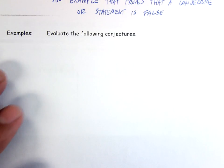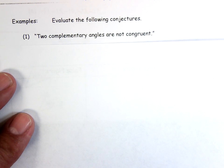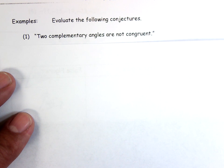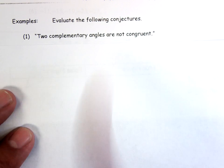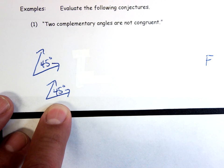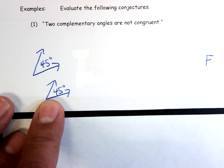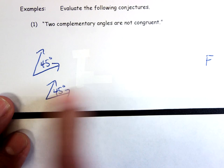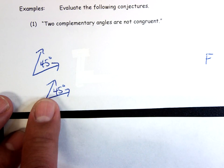It asks us to evaluate the following conjecture: two complementary angles are not congruent. Is that true or false? If it's true, it must be true always. Here's my example: a 45-degree angle and another 45-degree angle. These are complementary angles and they are congruent. So this is a false statement — that was my counterexample.